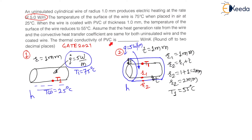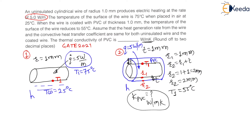The thermal conductivity of PVC: the coating is done with PVC which acts as insulation. Therefore they are asking what is the thermal conductivity of this PVC insulation in Watt per meter Kelvin — that is the standard unit of thermal conductivity. Round off to two decimal places. Let us try to understand this question.